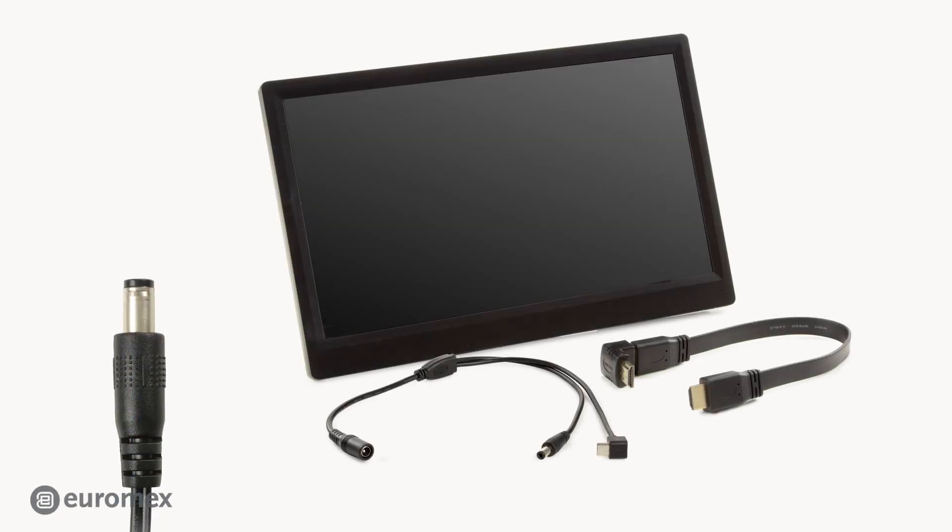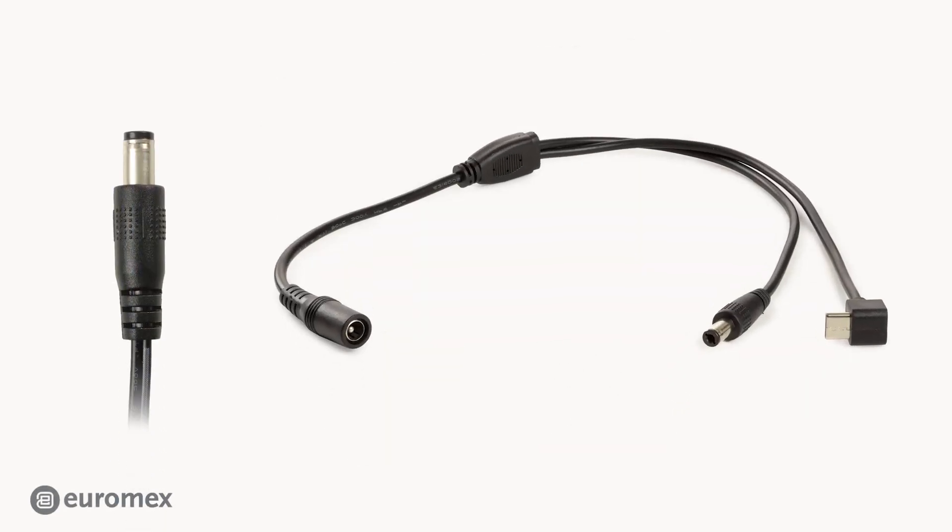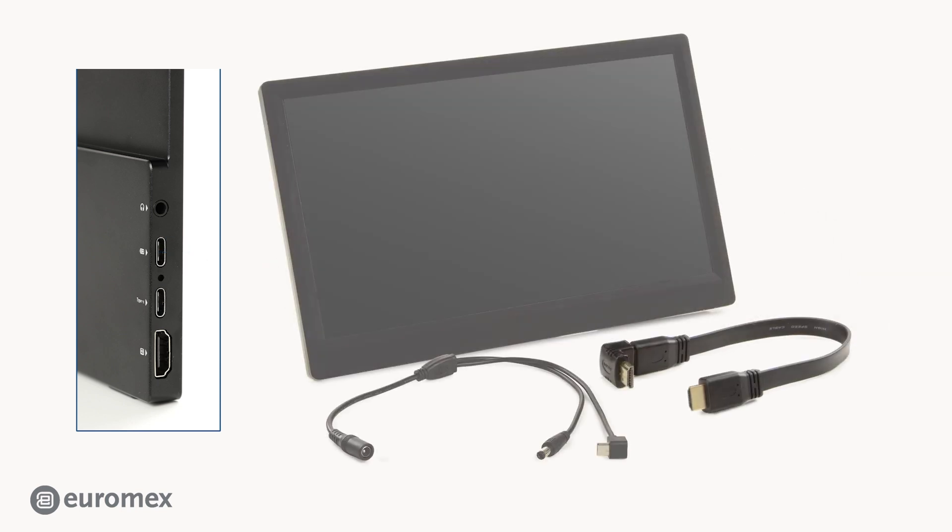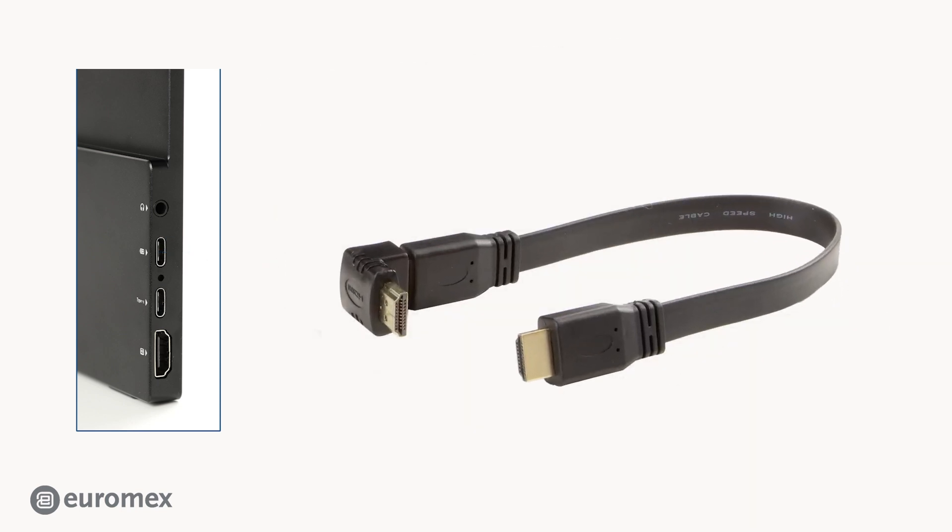Let's start with the power adapter. Use the Y-cable to connect with the power adapter. Use the USB-C plug to connect to the screen. Plug the HDMI connection into the screen. The other side connects to your camera.